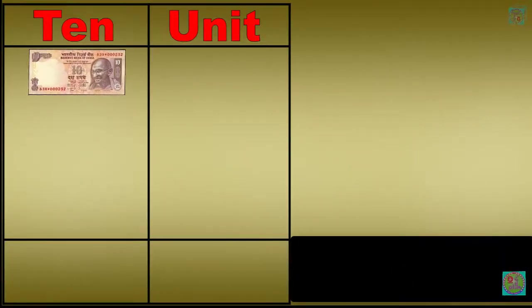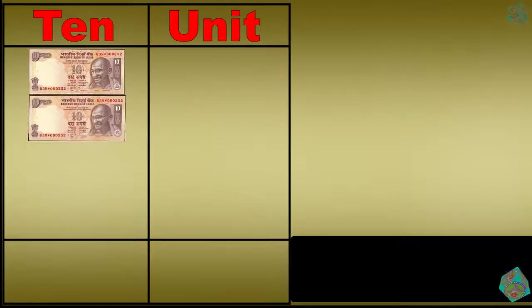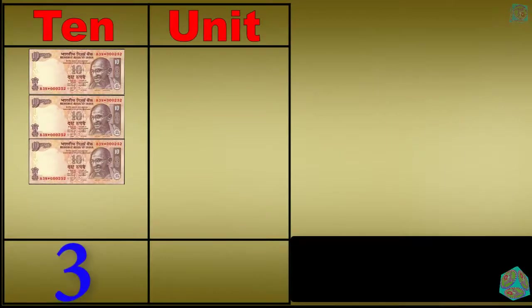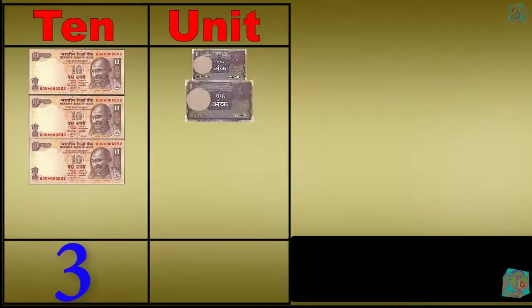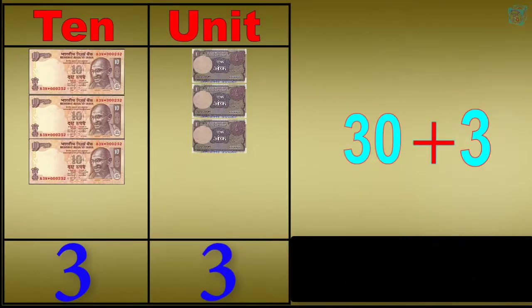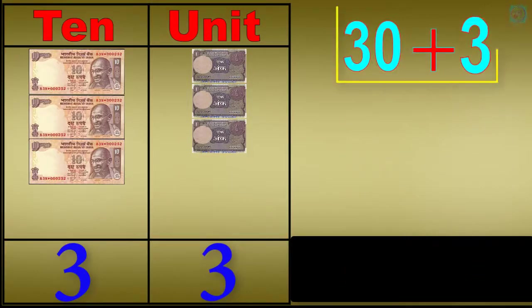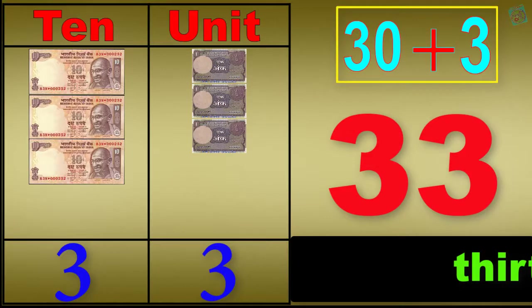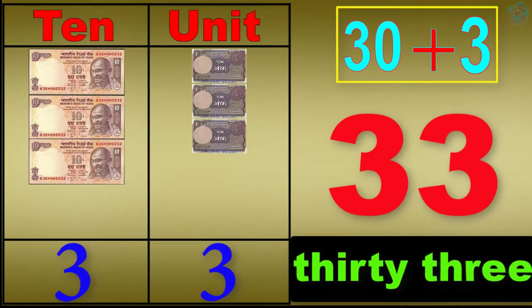1 ten, 2 tens, 3 tens, 3 tens 1 unit, 3 tens 2 units, 3 tens 3 units. 30 plus 3 equals 33. T-H-I-R-T-Y-T-H-R-E-E, 33.